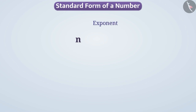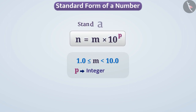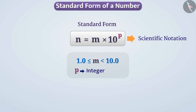We can express any number n using exponents as m into 10 to the power of p, where m is equal to or greater than 1.0 but less than 10.0, and p is an integer. This form of a number is called its standard form. We also call it the scientific notation of a number.